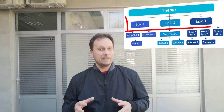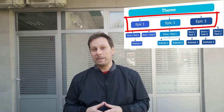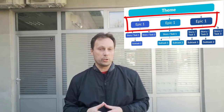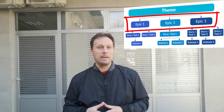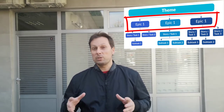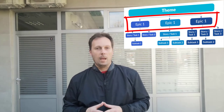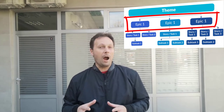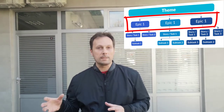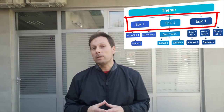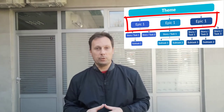Epics in Scrum represent a significant amount of work that we need to divide into smaller user stories. An epic can be spread across sprints and even across Agile teams. An epic can be a high-level description of what the client wants, and accordingly it has some value attached to it.